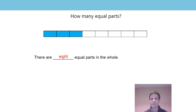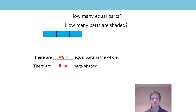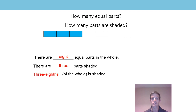Now let's have a look at it again. I would now like to know how many parts are shaded. That's right — three parts are shaded. Let's say the sentence stem together: there are three parts shaded. So I can now say three-eighths is shaded. Let's say that together: three-eighths is shaded.